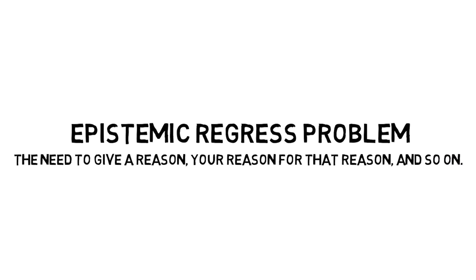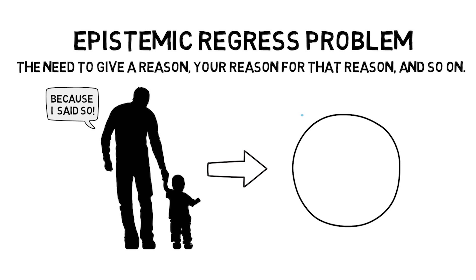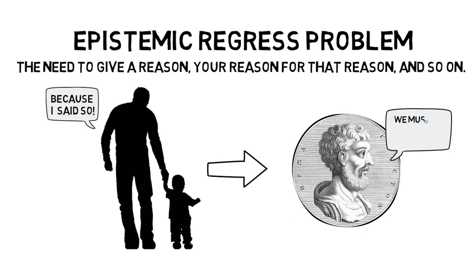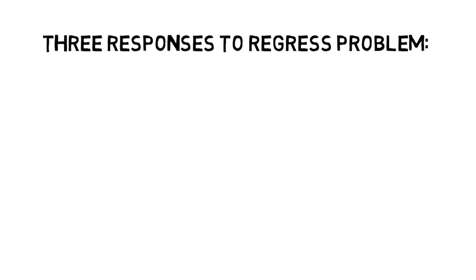And this is something that we can apply to any belief that you have. This is part of what allowed people like Sextus Empiricus to try to argue that the regress problem leads to a general skepticism. Because if there's a problem for one of your beliefs in this way, it's plausible that this same regress problem can pose a problem for all of your beliefs. Now, when we're exploring this regress of reasons, where you've given a reason for your belief and then you're asked for a reason for that reason, and a reason for that reason, and so on, it seems like we have three options.